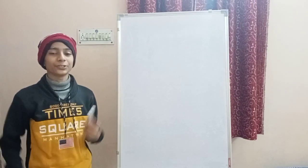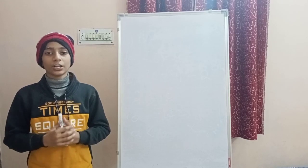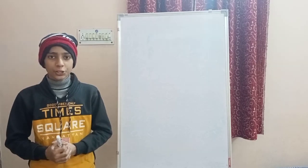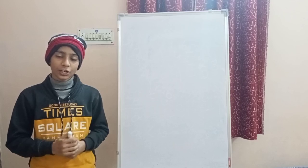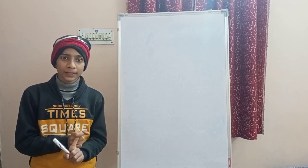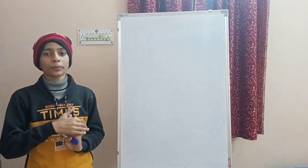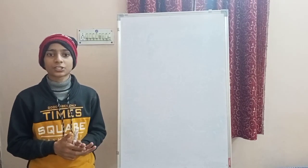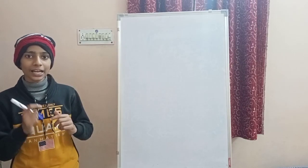Welcome back to another video. Today I'm going to teach you the topic of properties of multiplication and division. There are five properties of multiplication and three properties of division. The five properties are: closure property, commutative property, associative property, distributive property of addition over multiplication, and distributive property of subtraction over multiplication.